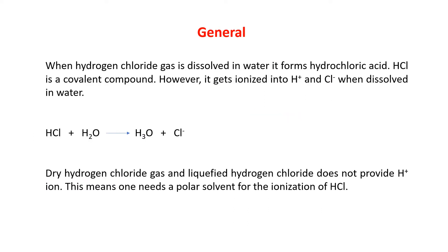When hydrogen chloride gas dissolves in water, it forms hydrochloric acid. HCl is a covalent compound, but it is a polar covalent compound, and it gets ionized into H⁺ and Cl⁻ when it dissolves in water.